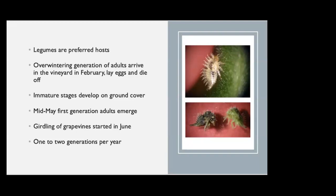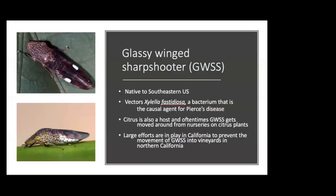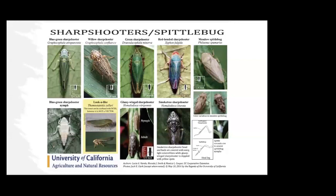Glassy-winged sharpshooter, also known as GWSS, is native to the southeastern U.S. and vectors Xylella fastidiosa, the bacterium that causes Pierce's disease. Citrus is also a host, and GWSS often gets moved around from nurseries on citrus plants. Large efforts are in place in California to prevent the movement of glassy-winged sharpshooter into vineyards in Northern California. In addition, other sharpshooter and spittlebug species can also transmit the bacterium that causes Pierce's disease, including blue-green, red-headed, willow sharpshooter, and meadow spittlebug — quite a few vectors of Xylella fastidiosa.